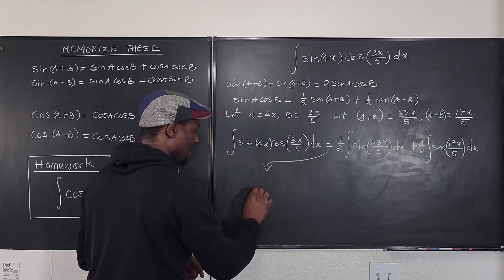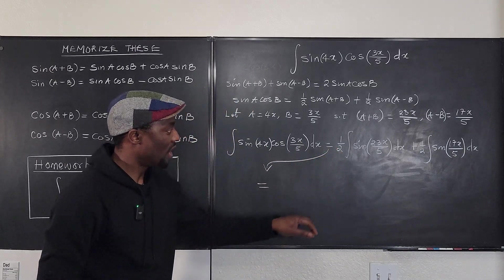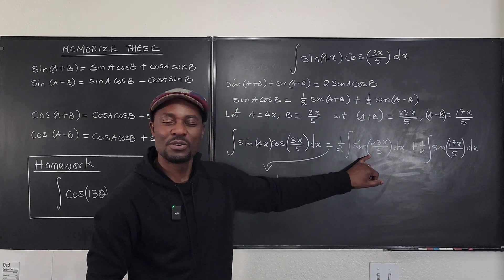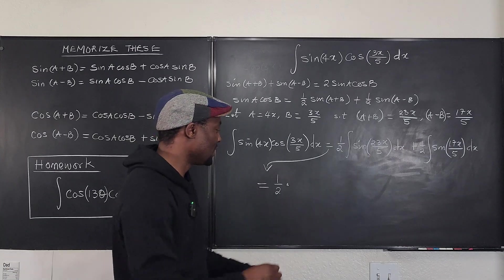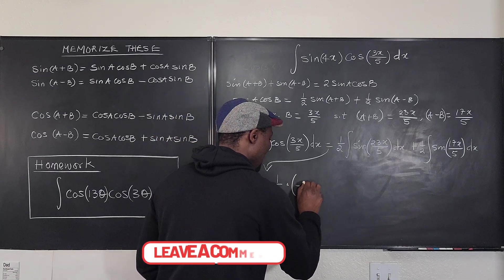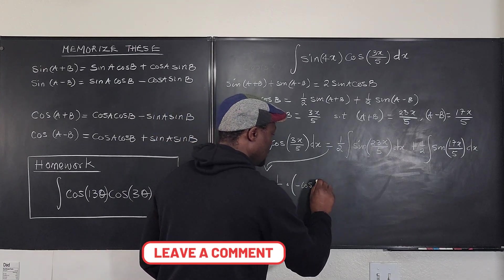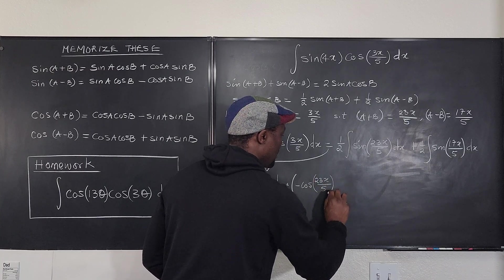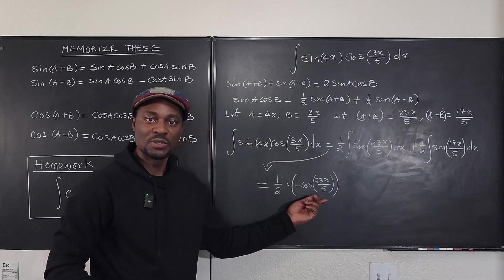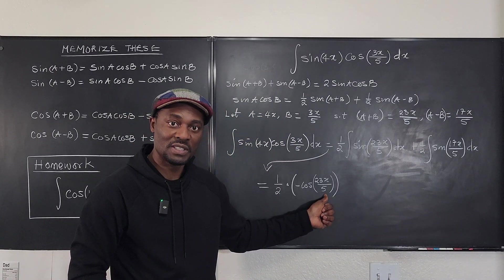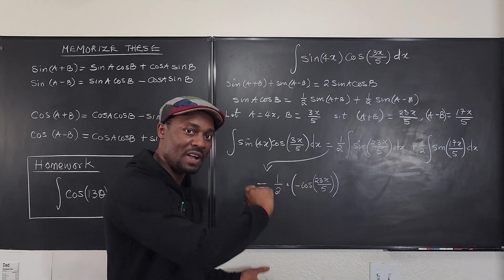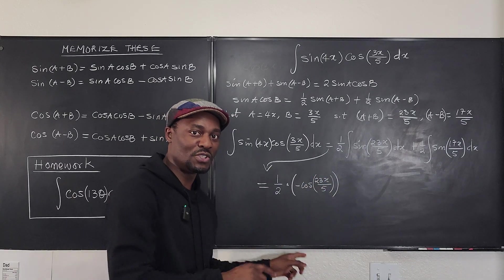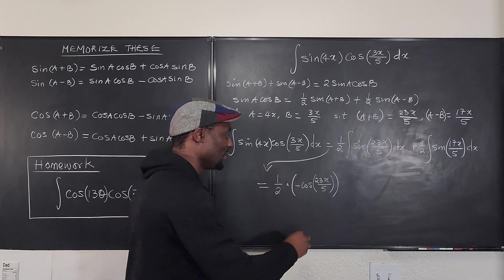Well, this is 1/2 multiplied by what's the integral of sine? It's negative cosine, so it's going to be this times negative cosine of 23x/5. But remember, when you integrate any cosine function, you take the derivative of what's inside and then you use it to divide. So the derivative of this is 23/5, but when you use it to divide it becomes 5/23 as a product, times 5/23.